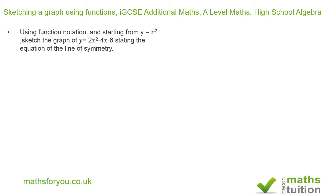To do this we need to use our skills on completing squares as a starting point. I can rewrite my equation by factorizing 2 out as 2 into x squared minus 2x minus 3.